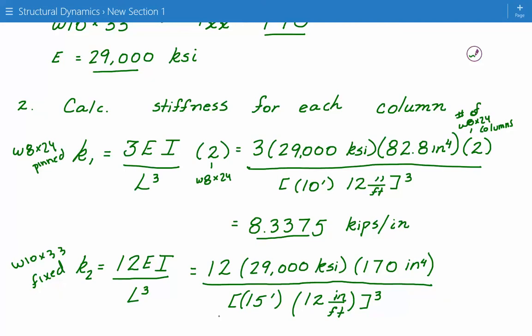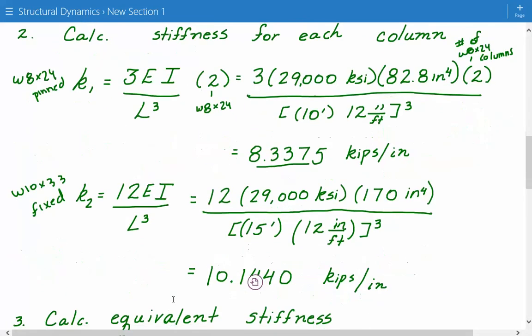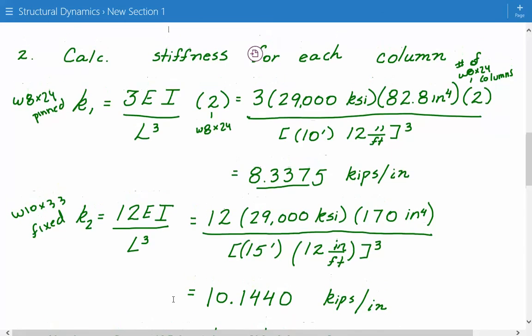So we just plug in the numbers, 12 times 29,000 KSI times 170 inches to the fourth power. And we divide it by the length. Also, the length is also different for these columns. The W8 by 24 columns are 10 feet, and the W10 by 33 column is 15 feet. And then we convert it into inches by multiplying by 12 and cubing that value. So the transverse stiffness for the middle W10 by 33 column is 10.1440 kips per inch.